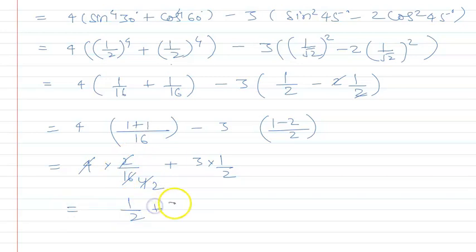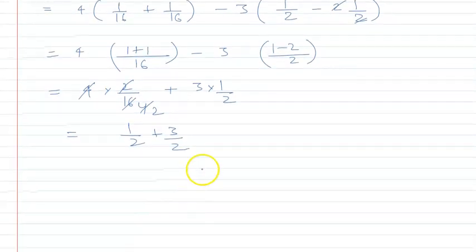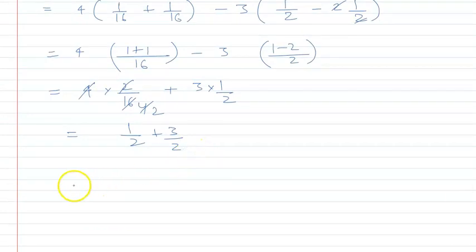4 times 2 gives us 1 upon 2, plus 3 upon 2. Taking LCM which is 2, we get 1 plus 3, which is 4 upon 2. This cancels out to give us 2.